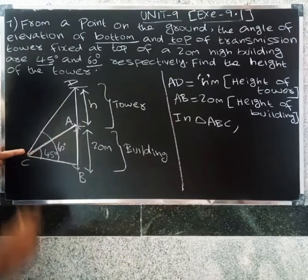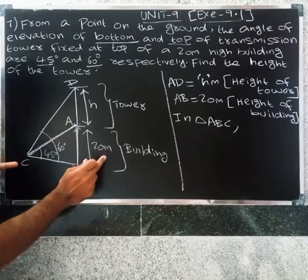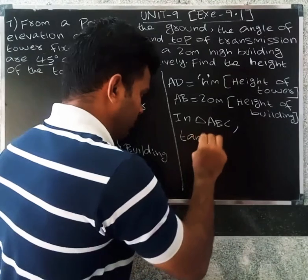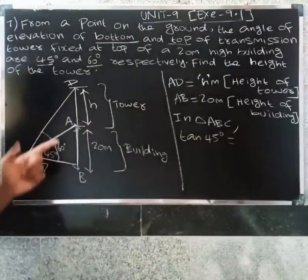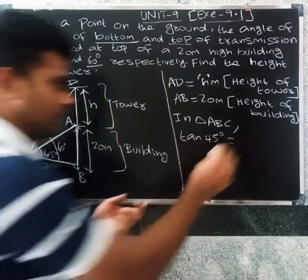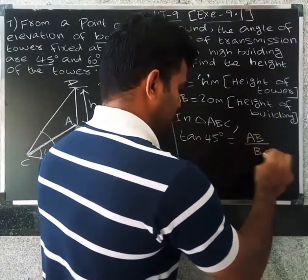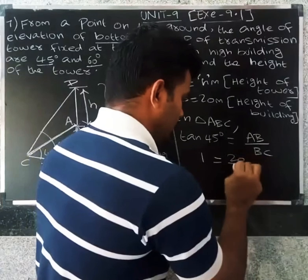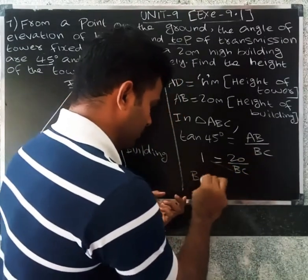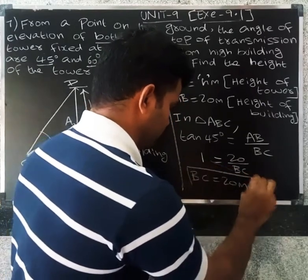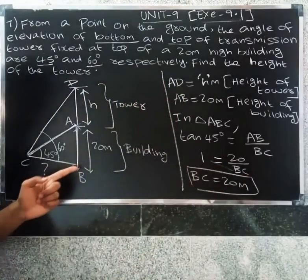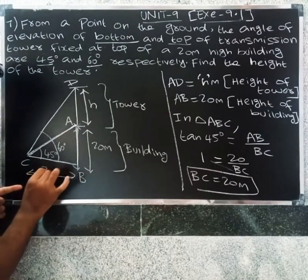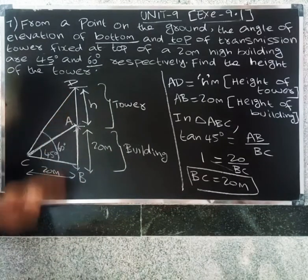This angle is 45 degrees. We can get the opposite side and adjacent side. Tan 45 equals opposite side AB divided by adjacent side BC. The value of tan 45 is 1, and AB is equal to 20. So 20 divided by BC equals 1. Cross multiplying, BC is equal to 20 meters.